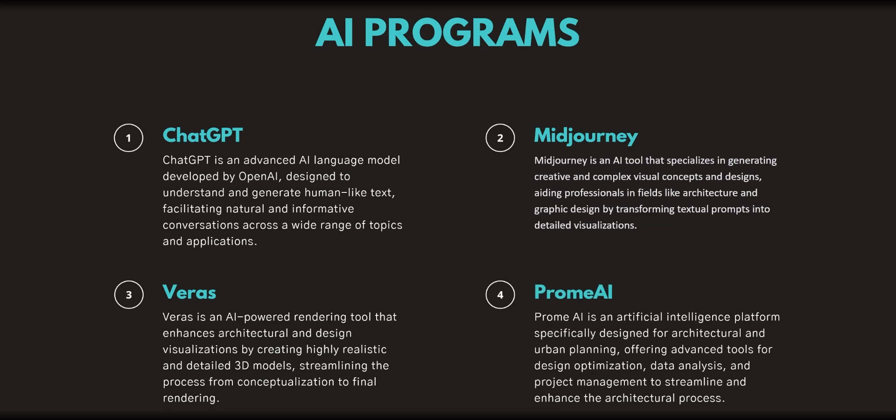Next is Prom.ai, which is an artificial intelligence platform specifically designed for architectural and urban planning, as well as other creative and graphic design, offering advanced tools for design optimization, data analysis, and project management to streamline and enhance the architectural process. It has areas for interior designers and architectural designers, and it's really great because it can take an image and color it up or render it. So it's not just generating a new image — it can really interpret. Be sure to take notes as you go through all these and find out the ways they can also work together to help your workflow.